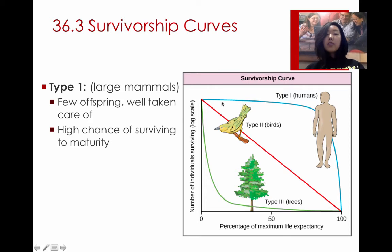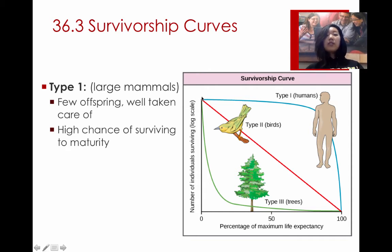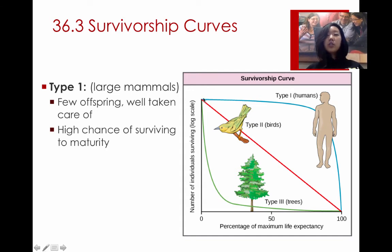Type 1 is seen in large mammals and humans. This is when there are not so many offspring that are born, but the ones that are born are well taken care of and therefore have a very high chance of surviving into maturity. So almost 100% of those that are born survive, and then it starts to plateau off as the population ages.